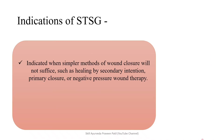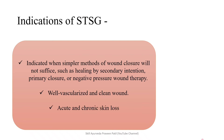Indications for STSG: it is indicated when simpler methods of wound closure will not suffice, such as healing by secondary intention, primary closure, or negative pressure wound therapy. When these fail or are not appropriate, we can proceed with STSG. Well-vascularized and clean wounds are selected, and both acute and chronic skin loss are indications for STSG.